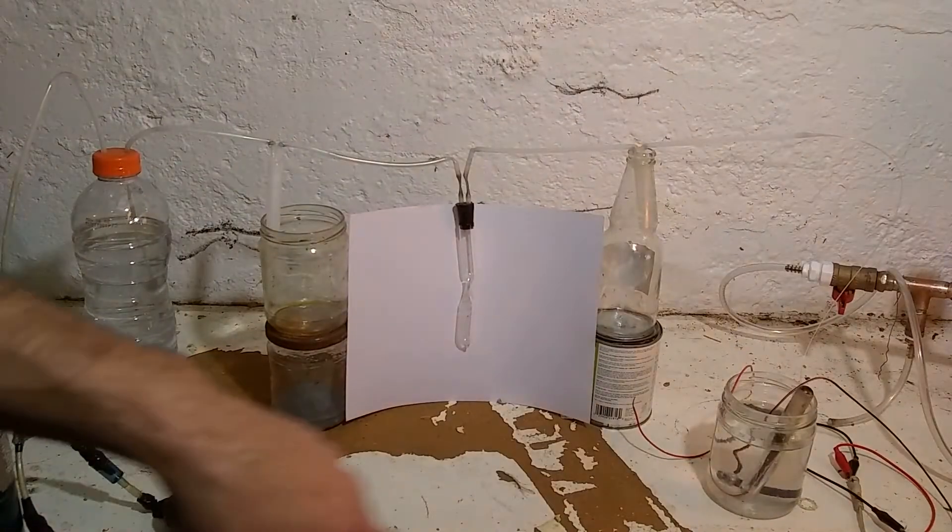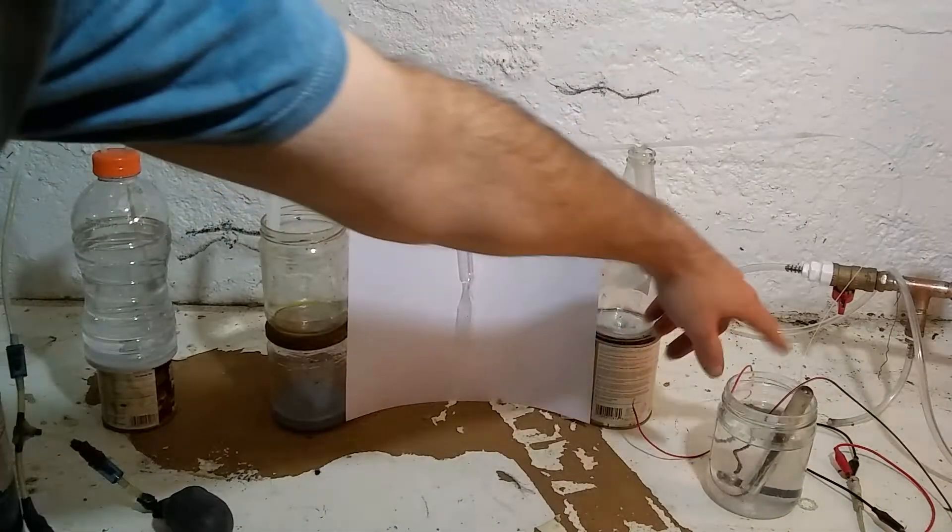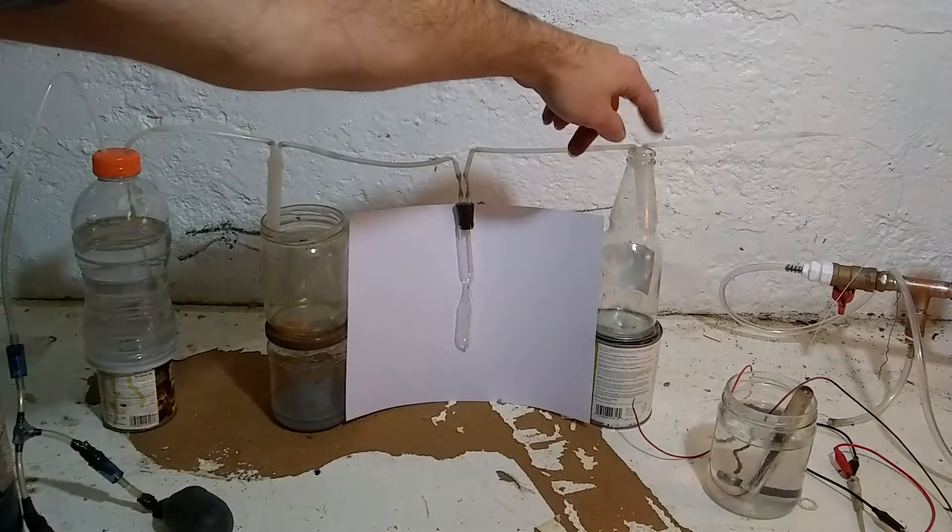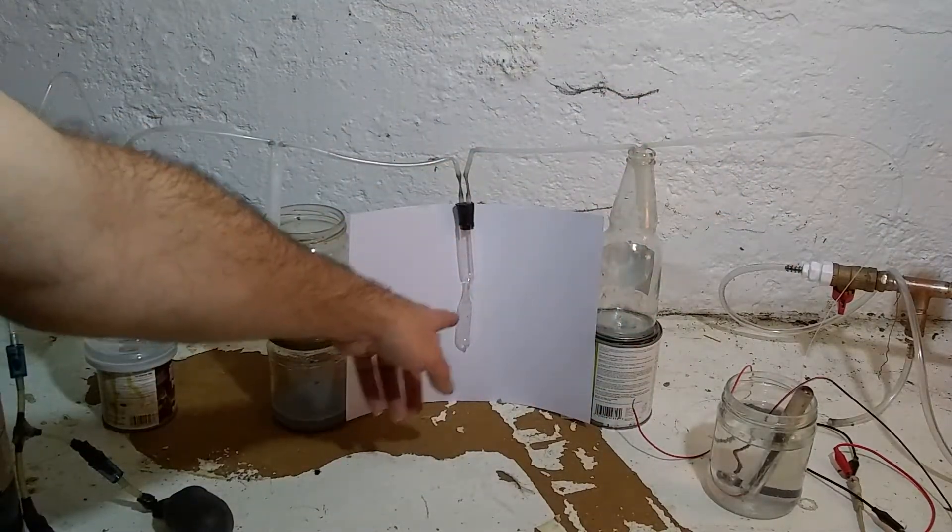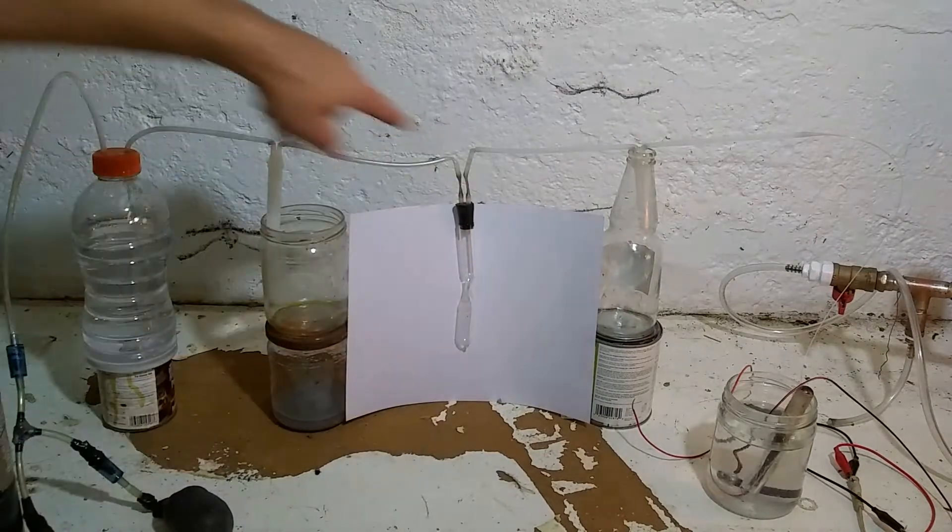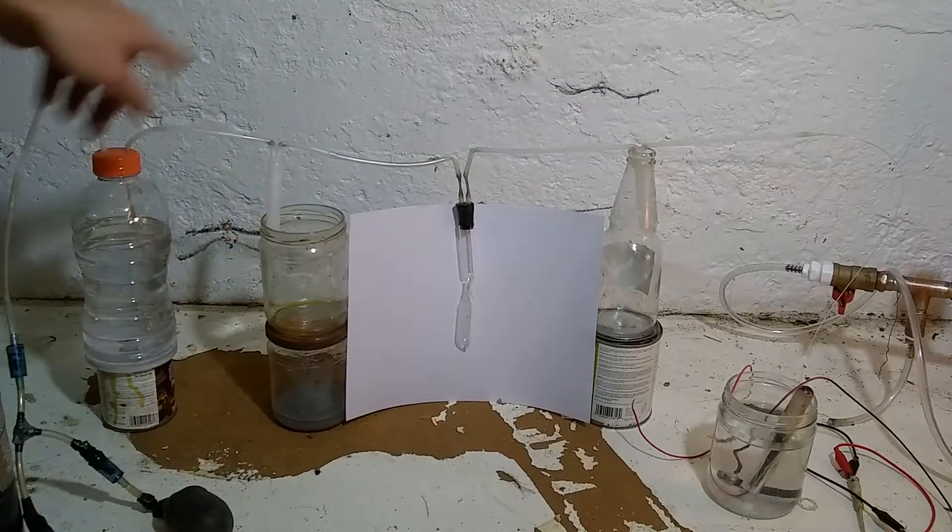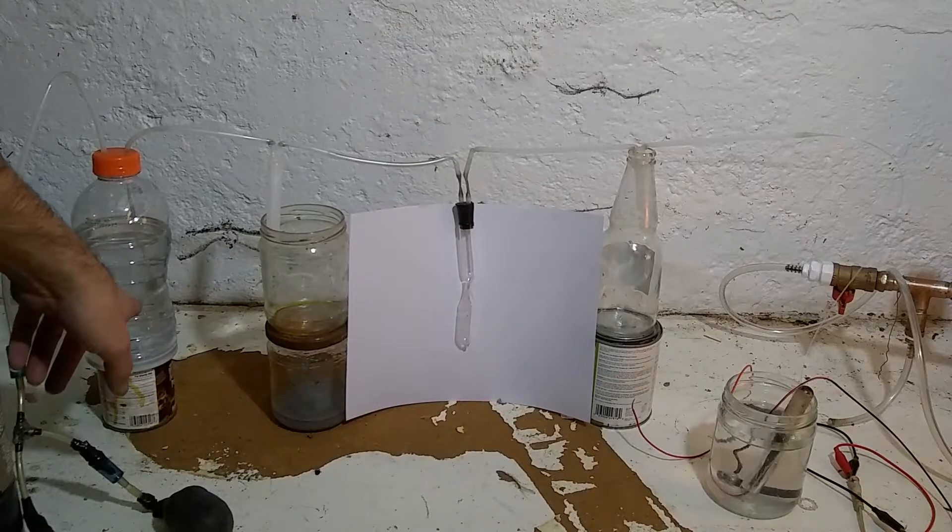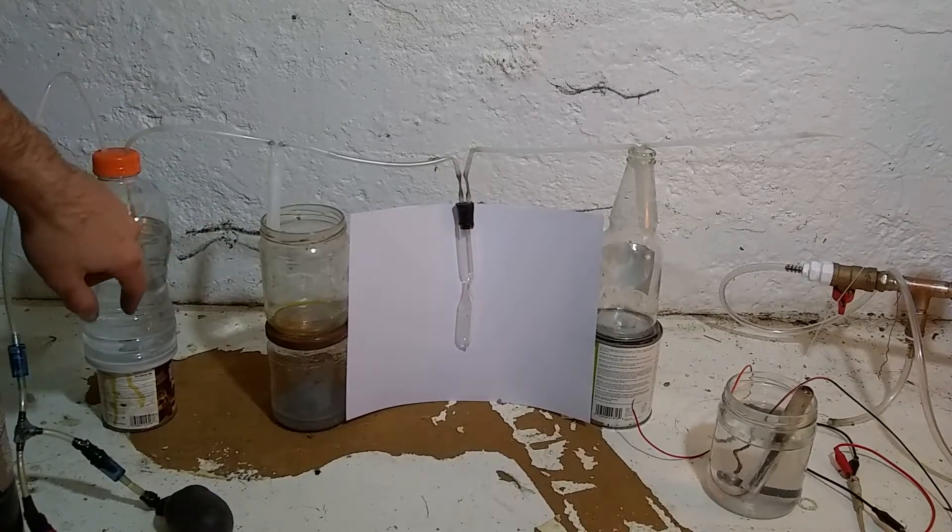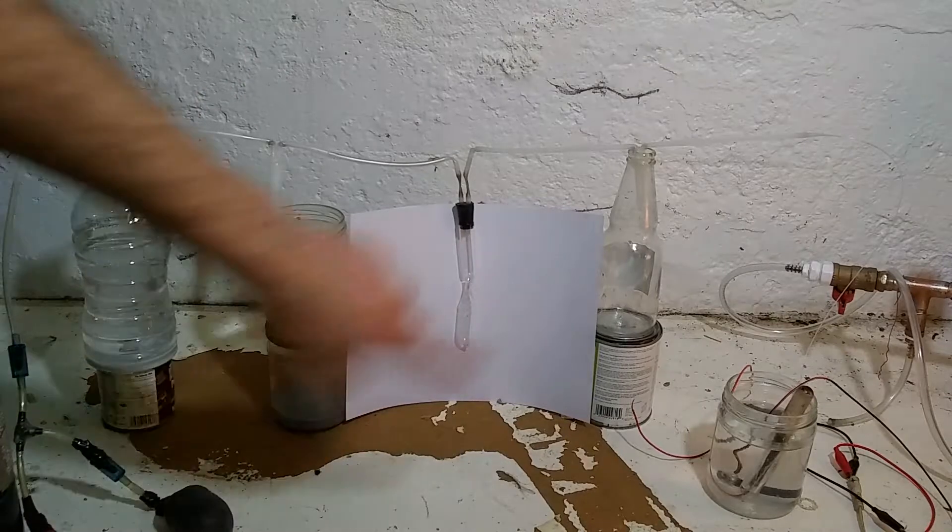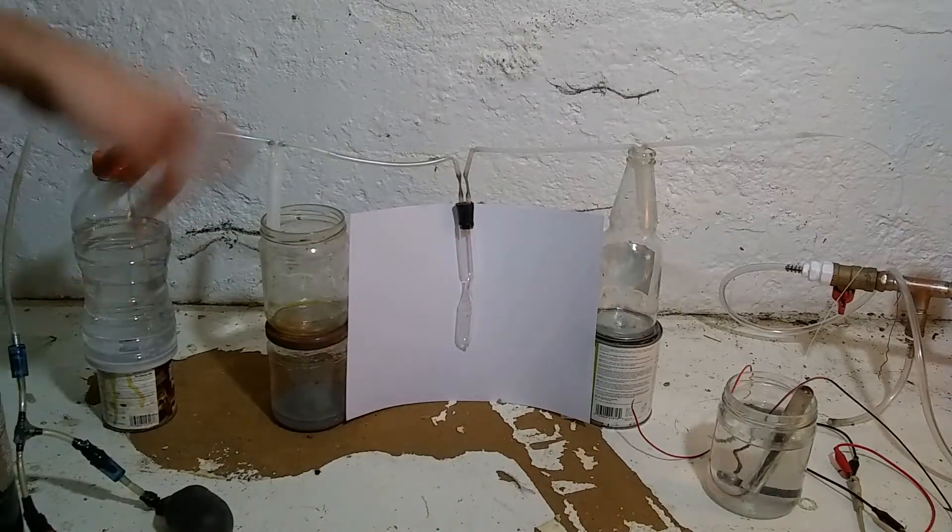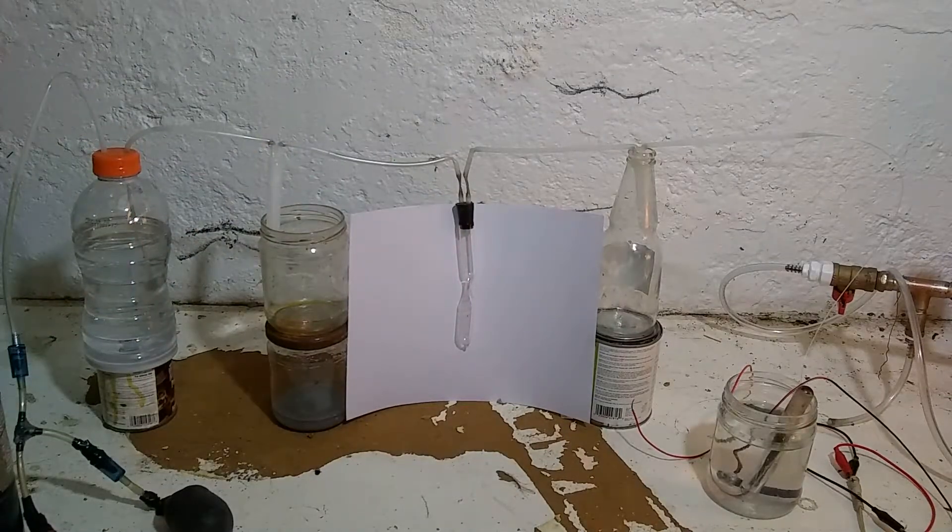Now the thin plastic tube goes up here into the first liquid trap, then in here to the ampoule to collect the chlorine, into the second trap, then into the final, I've been calling this a trap, it's a scrubber. And that will convert any chlorine that gets passed here into bleach.